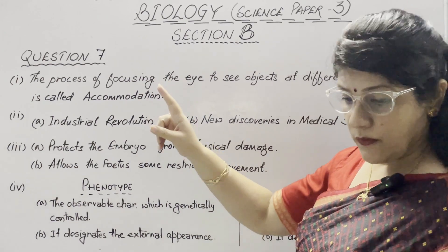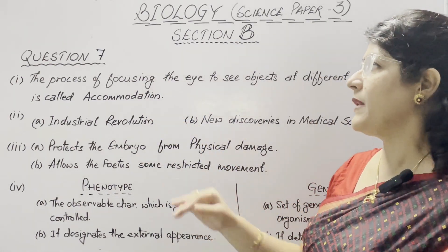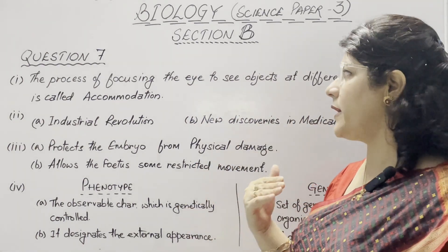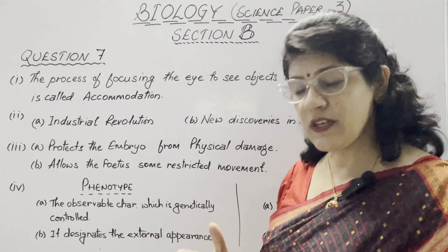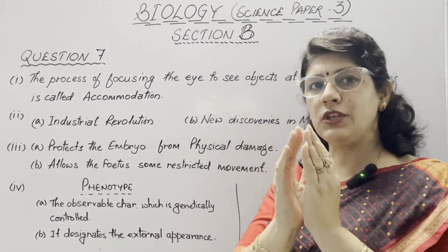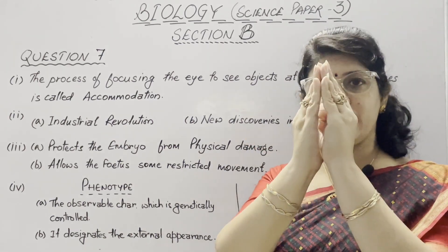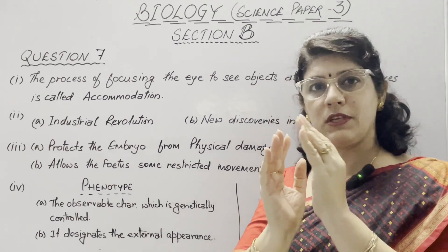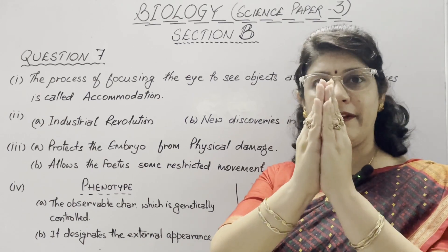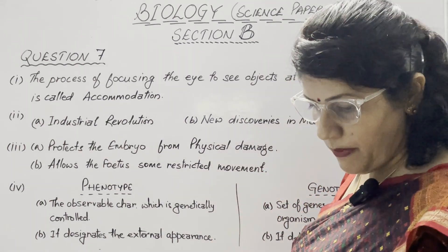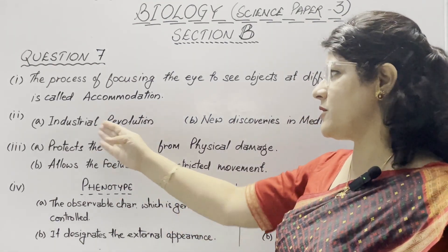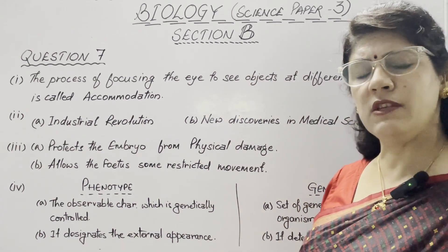In question number 7, the first part is to explain accommodation of the eye. The process of focusing the eye to see objects at different distances is called accommodation. For distant vision, the lens is more flattened. For near vision, the lens is more rounded or more convex. In the second part, give two reasons for a sharp rise in human population: the industrial revolution, and new discoveries in medical science.